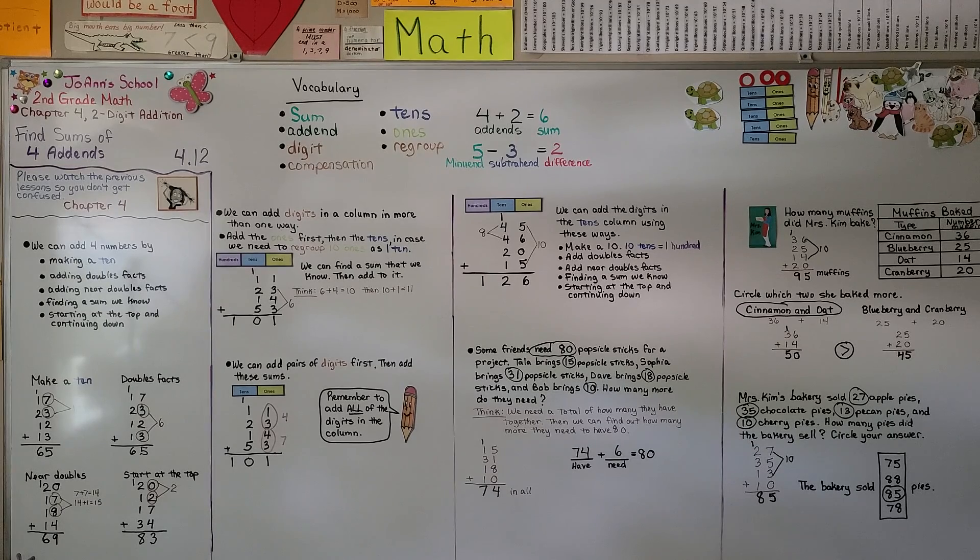Remember to add all of the digits in a column. Our next lesson, we're going to be moving on to chapter 5. We're going to be talking about two-digit subtraction and we're going to be using regrouping. Keep trying your best. Keep trying to memorize your math facts, your addition and subtraction facts. And I hope I'll see you next time. Bye.